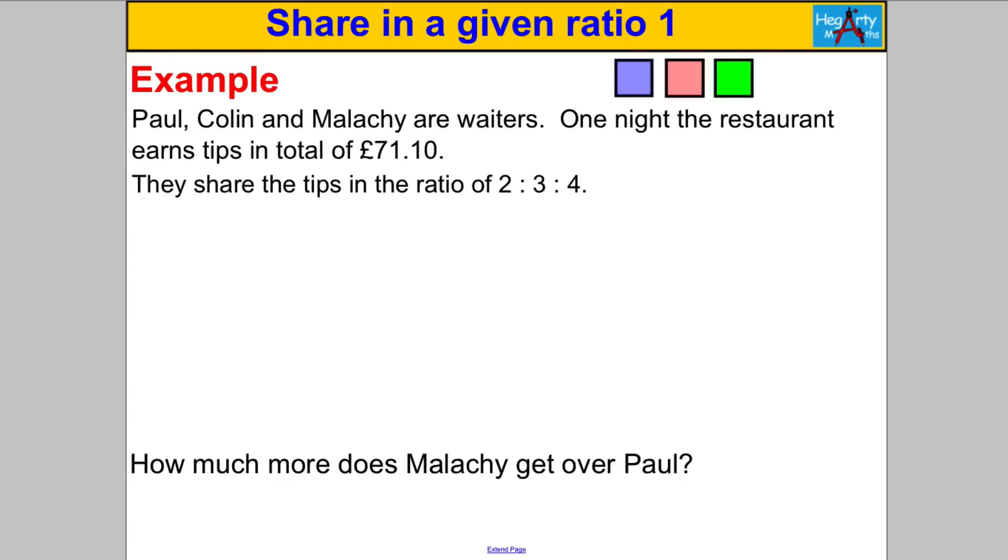Last one. Pause the video, have a go. Paul, Colin, and Malachy are waiters. One night the restaurant earns tips of 71 pounds 10 in total. They share the tips in the ratio 2 to 3 to 4. How much more does Malachy get over Paul? Step 1, always a picture. 2 parts, 3 parts, 4 parts. Let's draw it, let's label it up. Paul, Colin, Malachy. Now in total, all their parts add up to the total of 71 pounds and 10 pence.